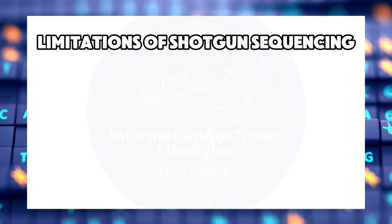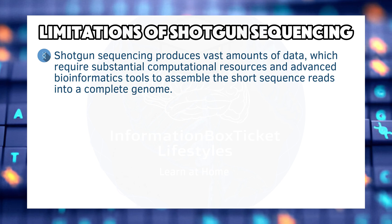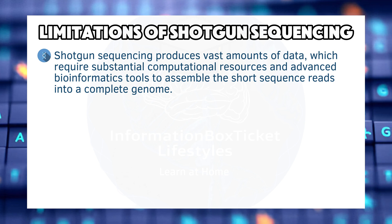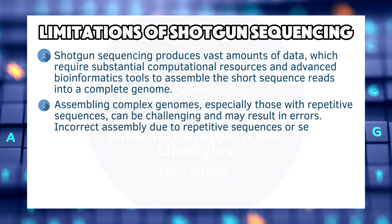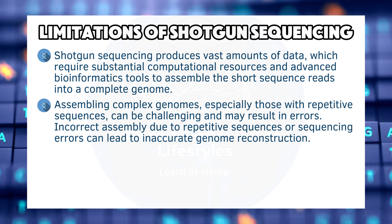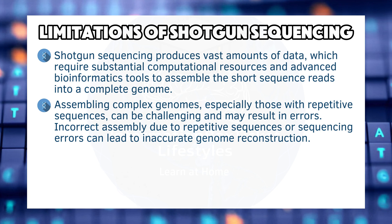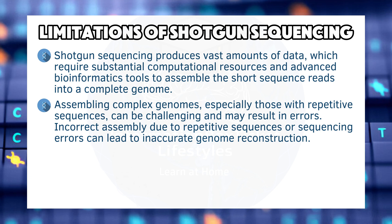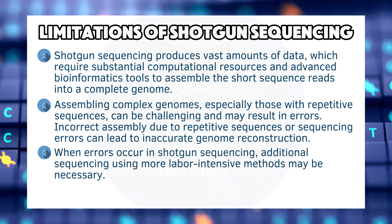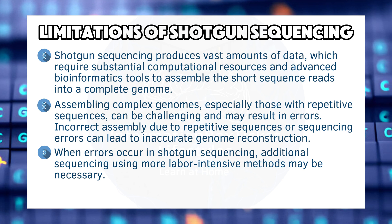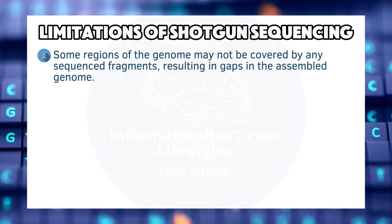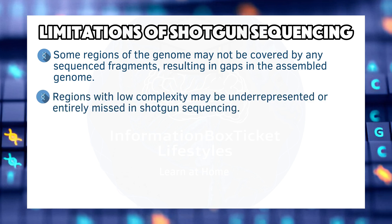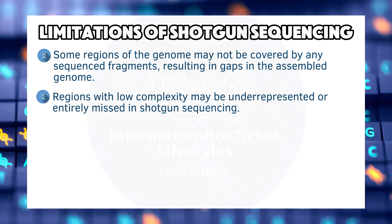Limitations of shotgun sequencing: Shotgun sequencing produces vast amounts of data, which requires substantial computational resources and advanced bioinformatics tools to assemble the short sequence reads into a complete genome. Assembling complex genomes, especially those with repetitive sequences, can be challenging and may result in errors. Incorrect assembly due to repetitive sequences or sequencing errors can lead to inaccurate genome reconstruction. When errors occur, additional sequencing using more labor-intensive methods may be necessary. Some regions of the genome may not be covered by any sequenced fragments, resulting in gaps in the assembled genome. Regions with low complexity may be underrepresented or entirely missed.